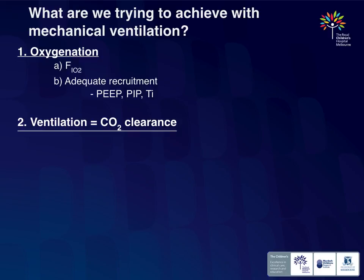Secondly, we're trying to ventilate. Ventilation is simple — it's just about CO2 clearance, and CO2 clearance is about minute ventilation. Minute ventilation is the product of rate times tidal volume minus the dead space. I keep reminding our fellows: it's minute ventilation we're concerned about. Tidal volume is just a part of that. When I ask our fellows what we're trying to achieve, they can all tell me they want to give four to six mls per kilo, but most don't know where that number came from — and it's not always the right number. Minute ventilation is often forgotten, but it's the key — you can't clear CO2 without the right minute ventilation.